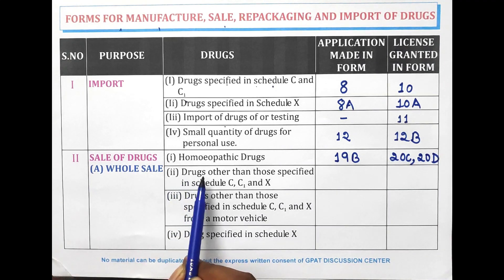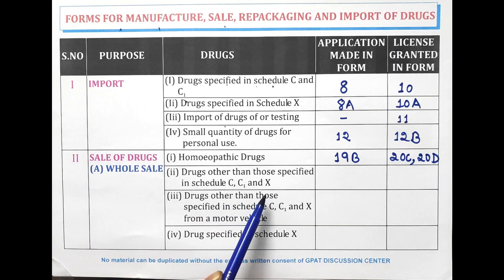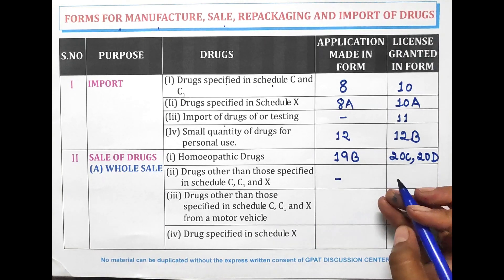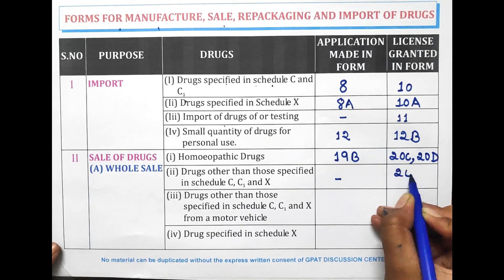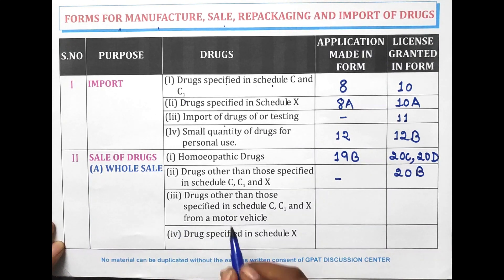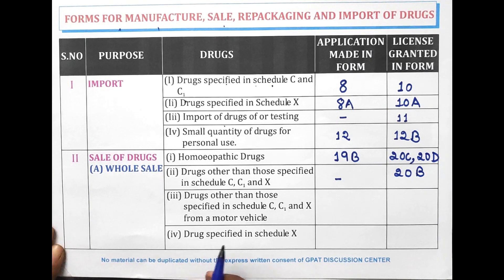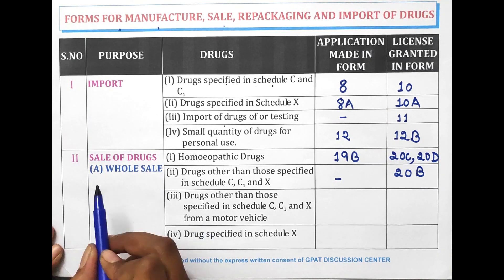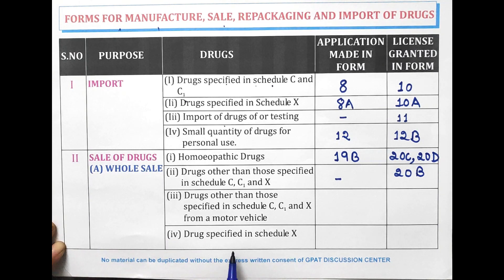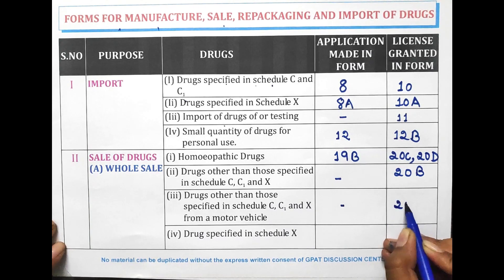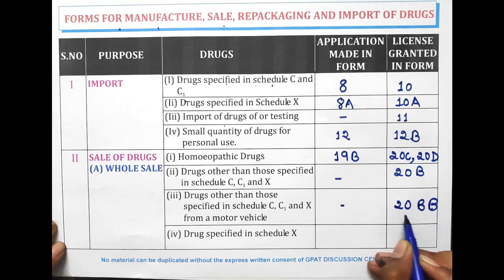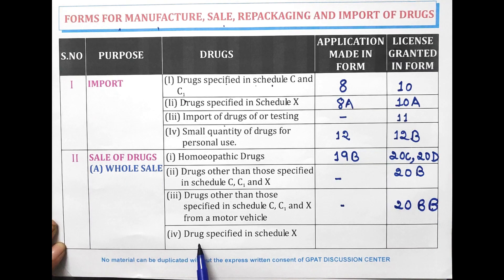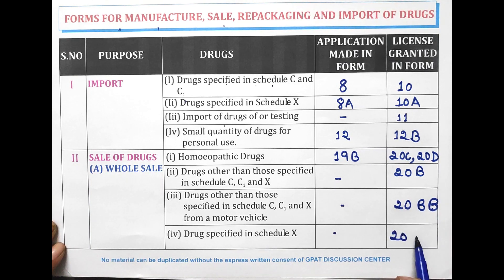In case of drugs other than those specified in Schedule C, C1 and X, for wholesale selling the license is granted in Form 20B. For selling drugs from a motor vehicle at wholesale, the license is also granted in Form 20B. For drugs specified in Schedule C, C1 and X for wholesale, the license is granted in Form 20G.